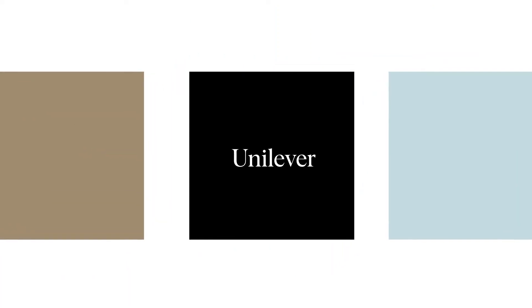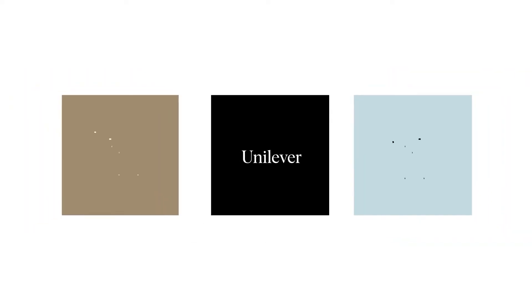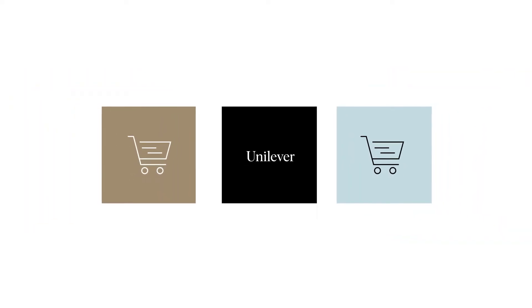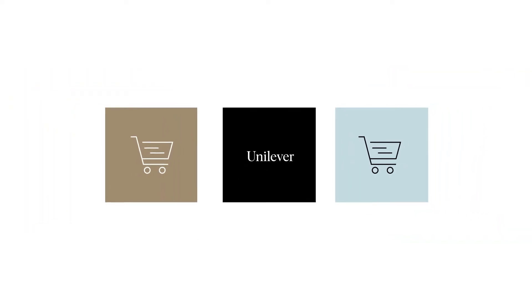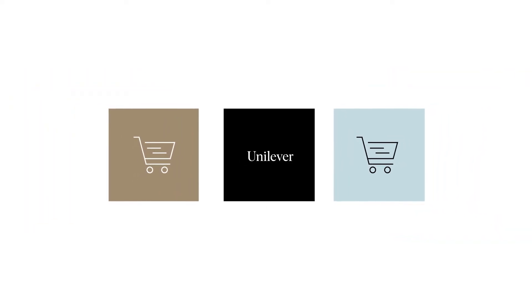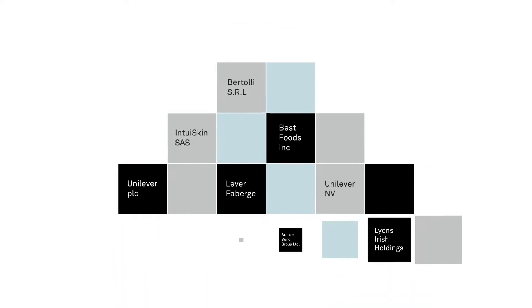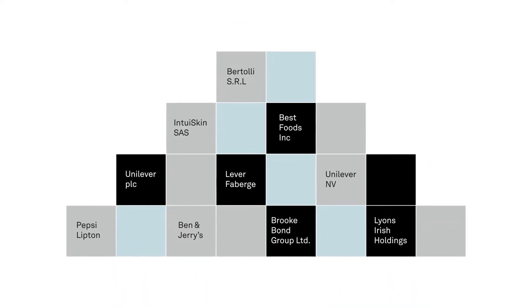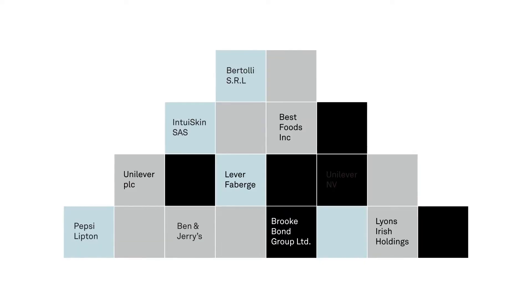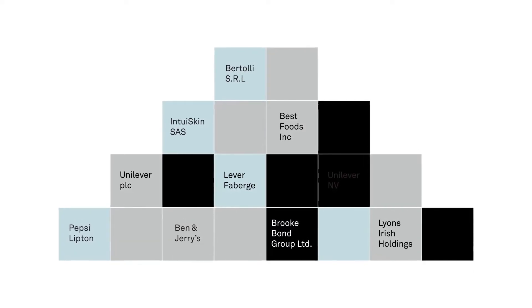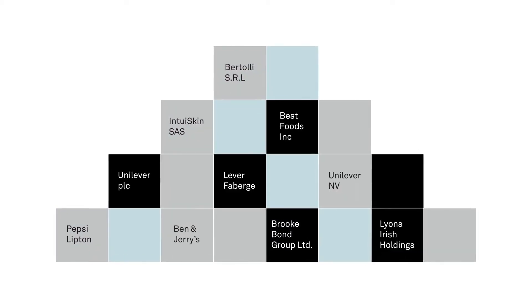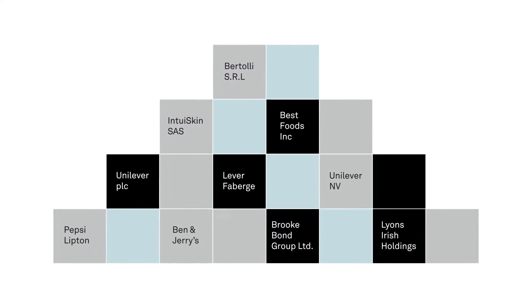Business structures are complex. Take Unilever for example, a multinational powerhouse in the fast-moving consumer goods sector. Unilever is not just one entity, but is comprised of multiple separate companies, forming a vast corporate hierarchy of over 1,000 subsidiaries.